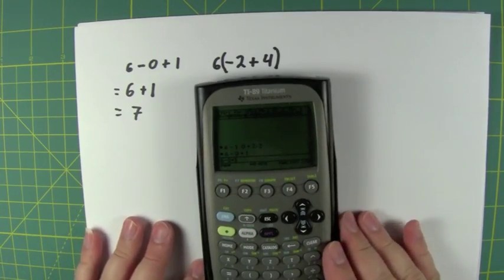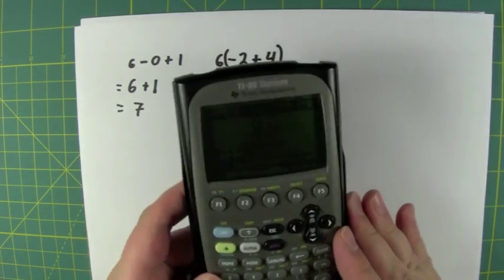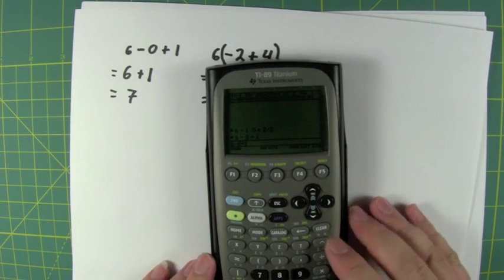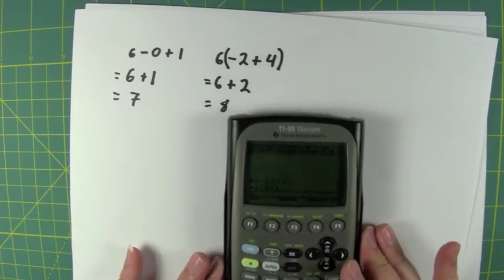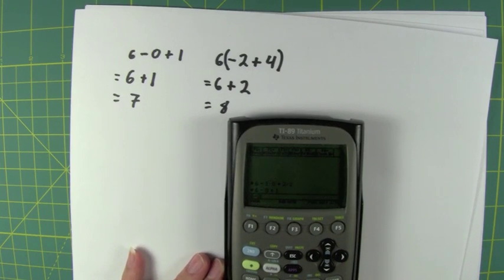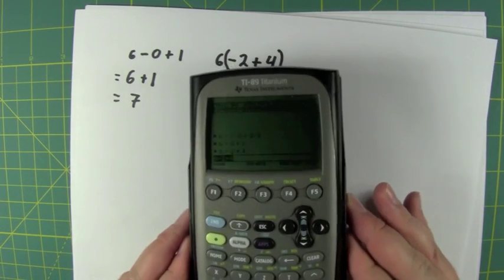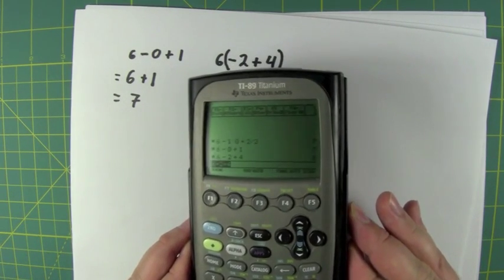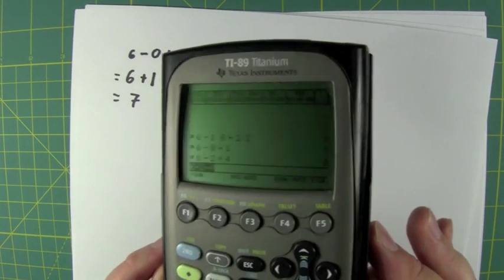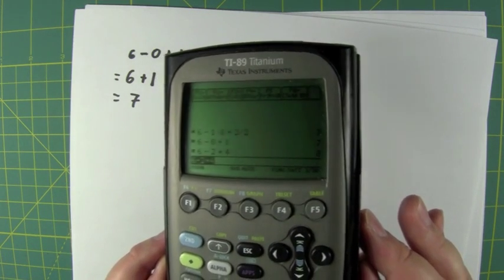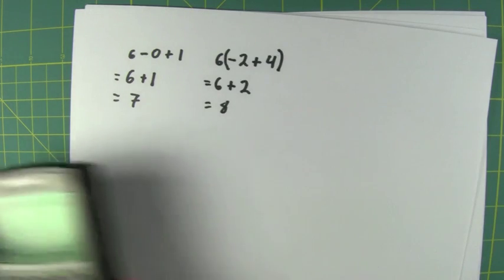And in case you don't believe me, we can bust out the old TI-89 here. We can take this and we can make this a minus two plus four, is equal to eight. And there we go. Put some light on that. You see that? It's hard to tell. I gotta set up to draw on paper.